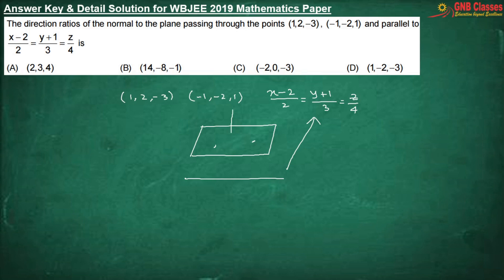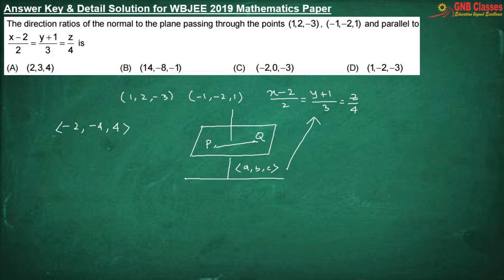Let us assume that the normal to the plane has direction ratios A, B, C. The direction ratios of the line joining the two points P and Q is −2, −4, and 4. Since the normal to the plane is perpendicular to PQ, we get: −2A − 4B + 4C = 0.